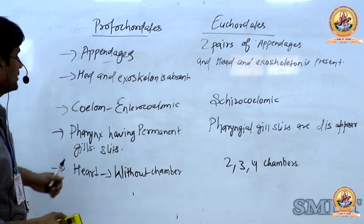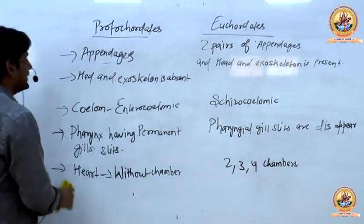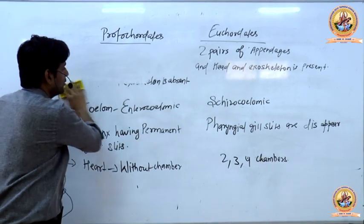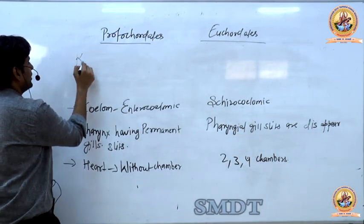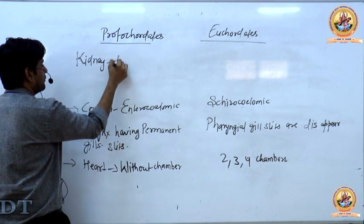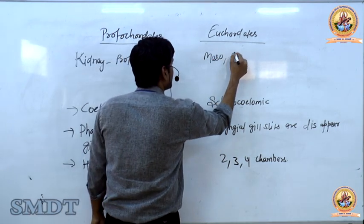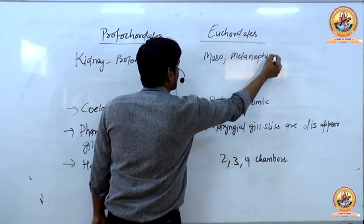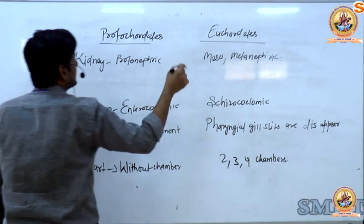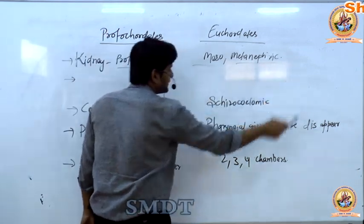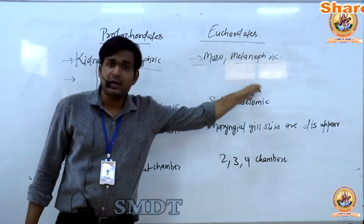Regarding kidneys: in Protochordata, the kidneys are protonephric. In Eurochordata, the kidneys are mesonephric or metanephric. What type of kidney does a human have — protonephric, mesonephric, or metanephric? Please tell me in the comment section. This is a very easy question, but do try to write the answer in the comment section.